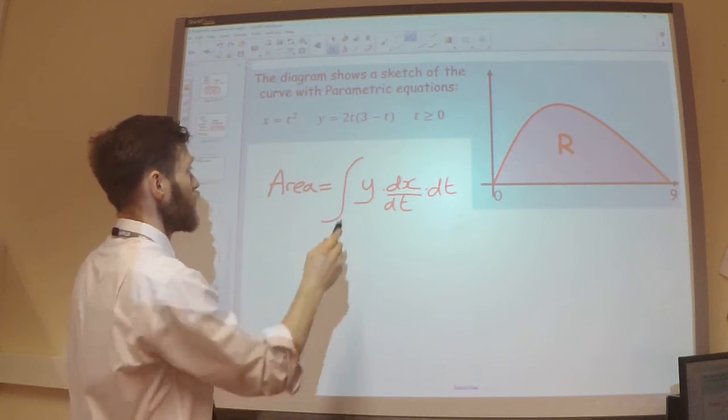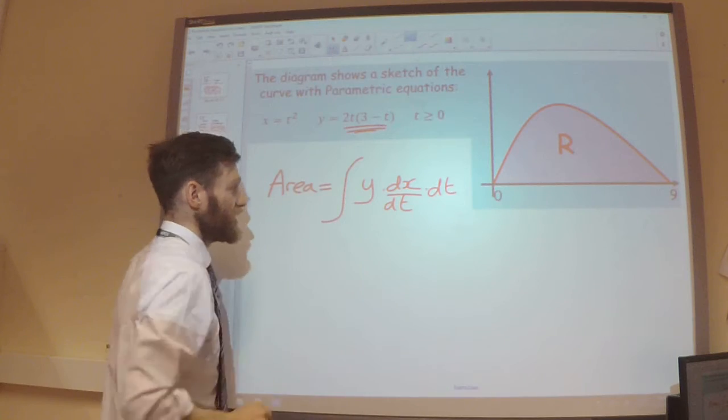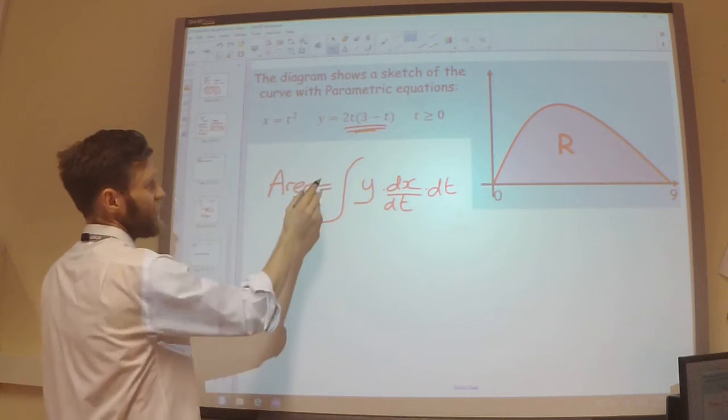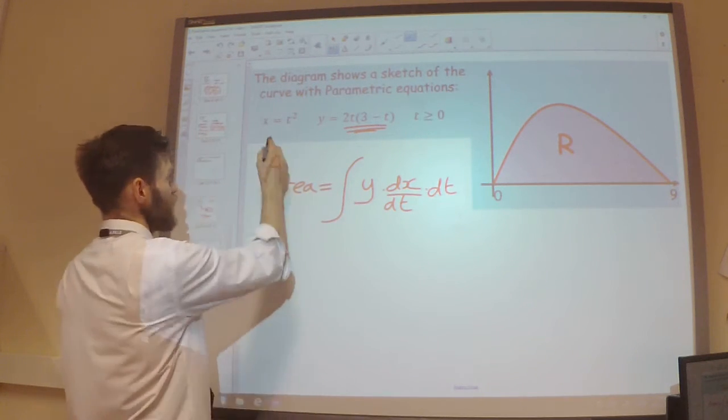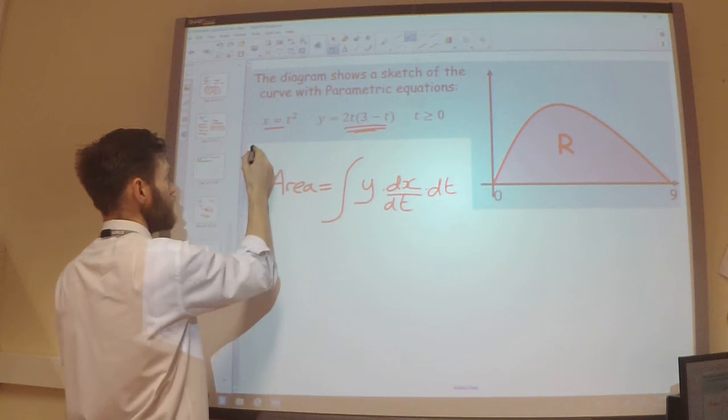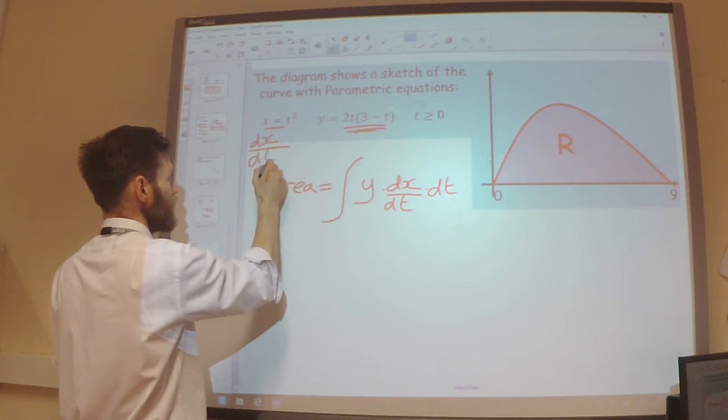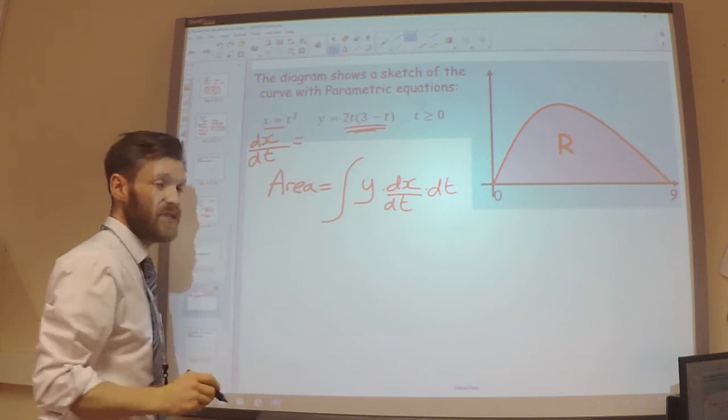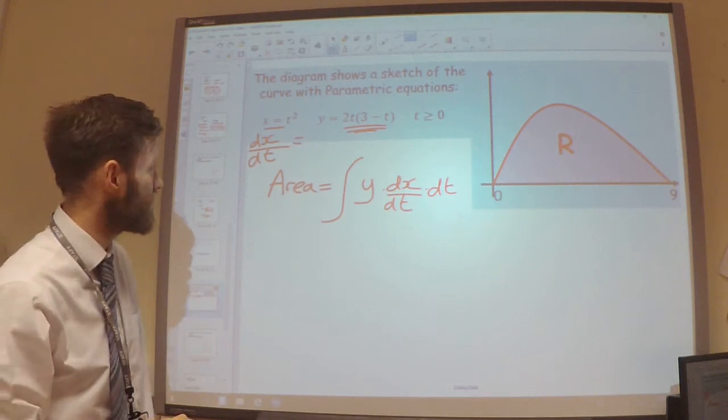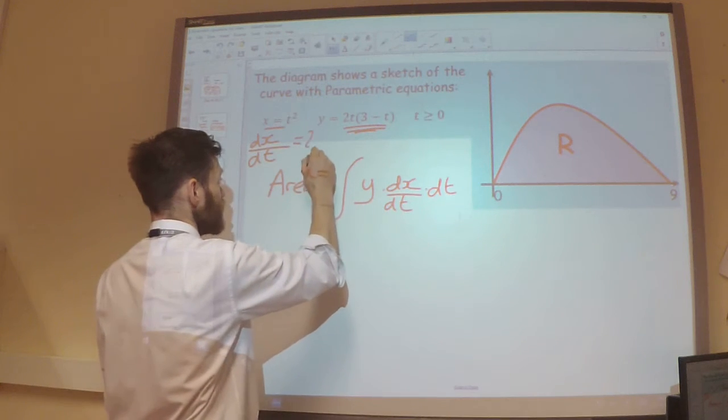I know my y function is there. I need to know my dx/dt. So I'm going to differentiate this with respect to t. When I differentiate t squared, I get 2t.